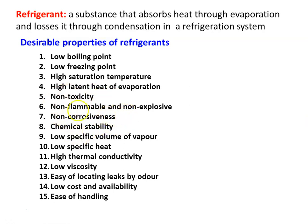Chemical stability means the refrigerant should not chemically react with other components. Low specific volume of vapor means the compressor size will be smaller. Low specific heat allows heat absorption; high thermal conductivity allows easy heat transmission; low viscosity allows easy flow. Easy location of leakage by odor means that if leakage occurs, the smell of the refrigerant should allow identification of the leakage. The refrigerant should also be cheap, easily available, and easy to handle.